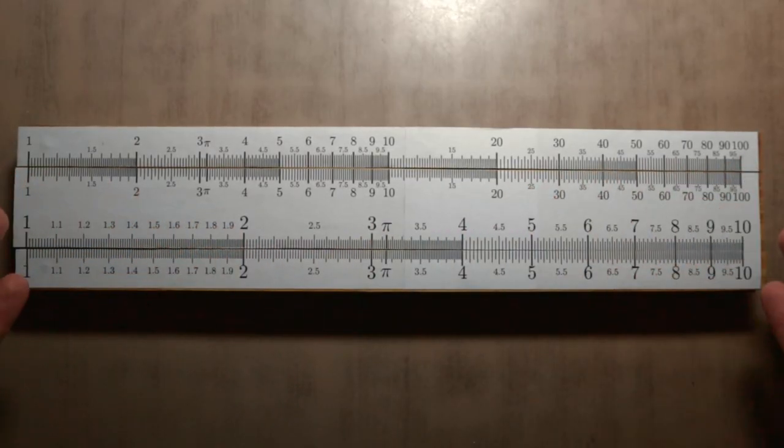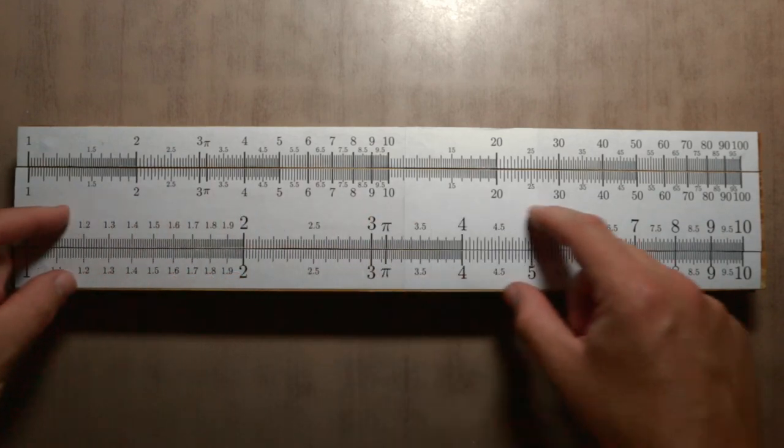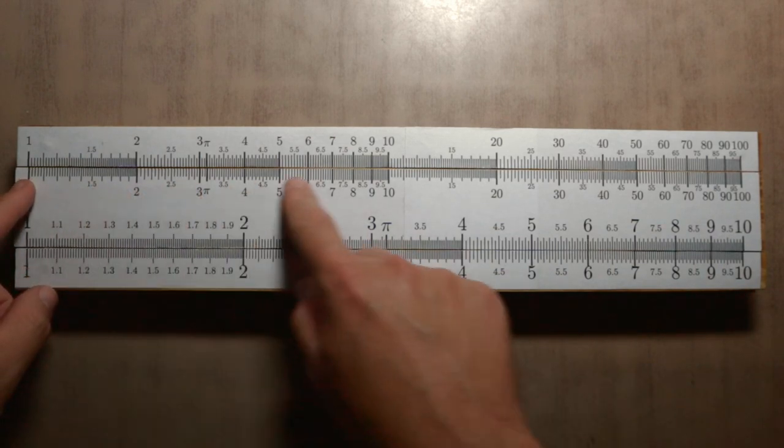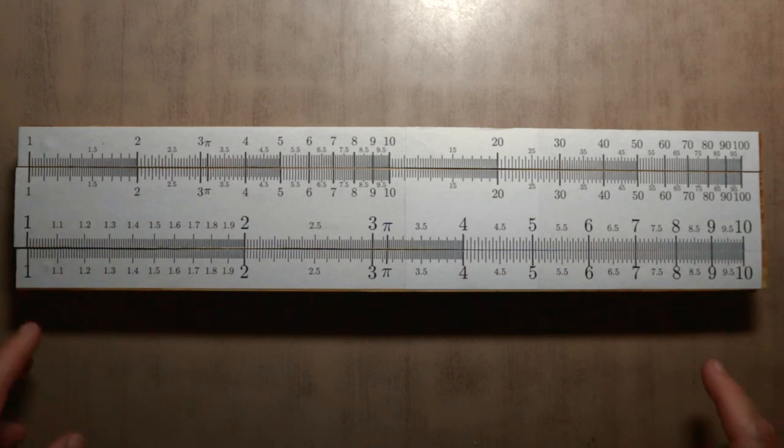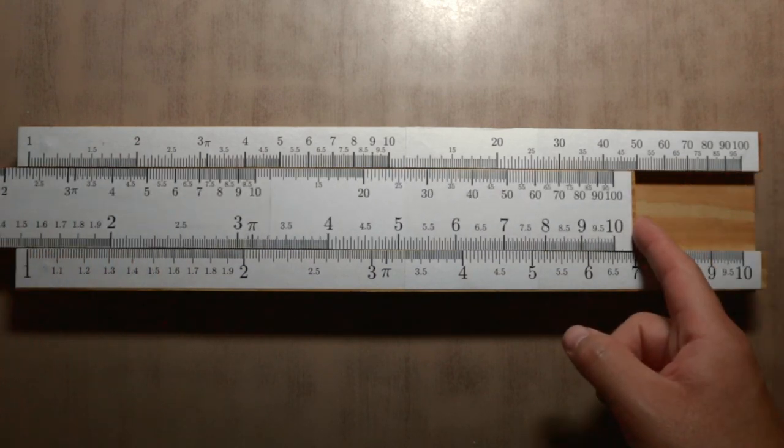This is a slide rule model that I made. Below, we have the scale from 1 to 10. Above, covering the same length, from 1 to 100. The middle section can slide and with it we can do the operations.